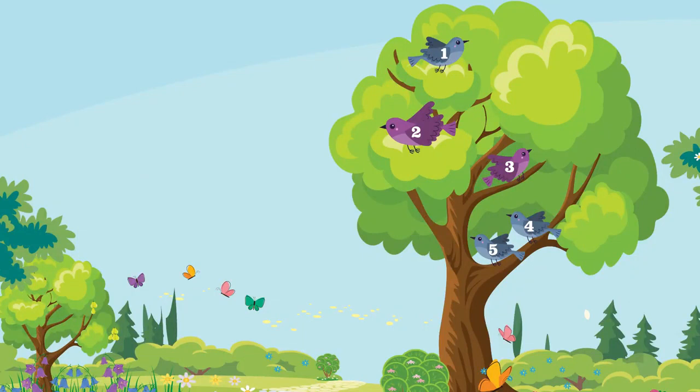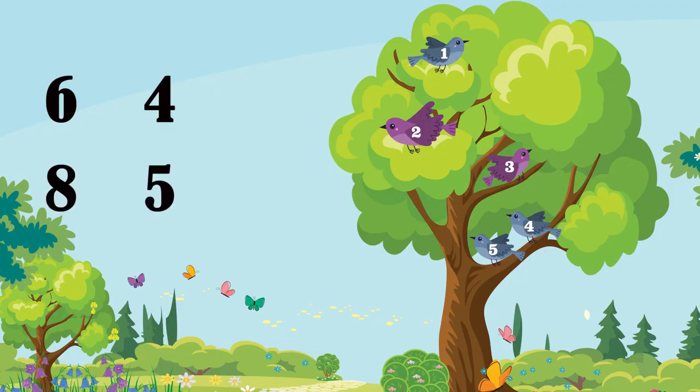These are few birds sitting on the tree. Count and circle the correct number. 1, 2, 3, 4, 5. And the options given below are 6, 4, 8, 5. So, we will circle the number 5 as there are 5 birds.